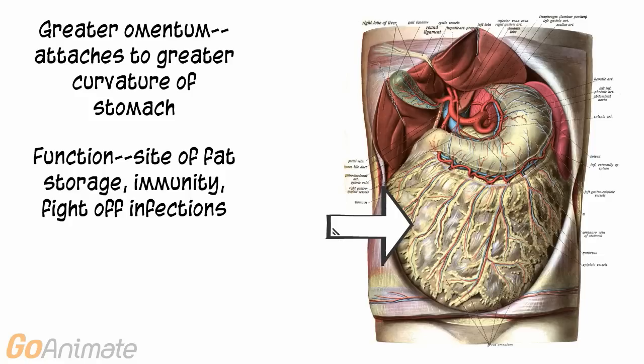The greater omentum is a large peritoneal membrane in the abdominal region. It attaches to the greater curvature of the stomach. The greater omentum is a site of fat storage and immunity, and helps to fight off infections. We hope you have learned something about the digestive system — see you next time.